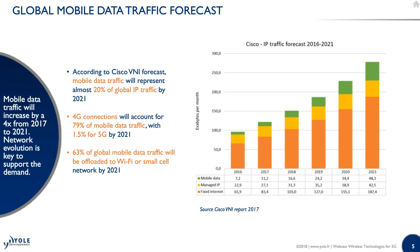From the VNI Cisco report, mobile data traffic is expected to grow. By 2021, 20% of the global IP traffic will be mobile — mostly 4G connections, but 5G connections will start as well, reaching 1.5% by 2021. Another important point is that 63% of the global mobile data traffic will be offloaded to Wi-Fi or small cells.